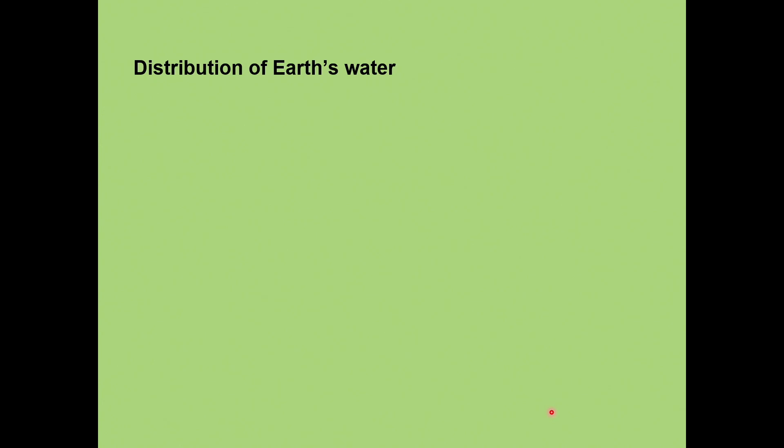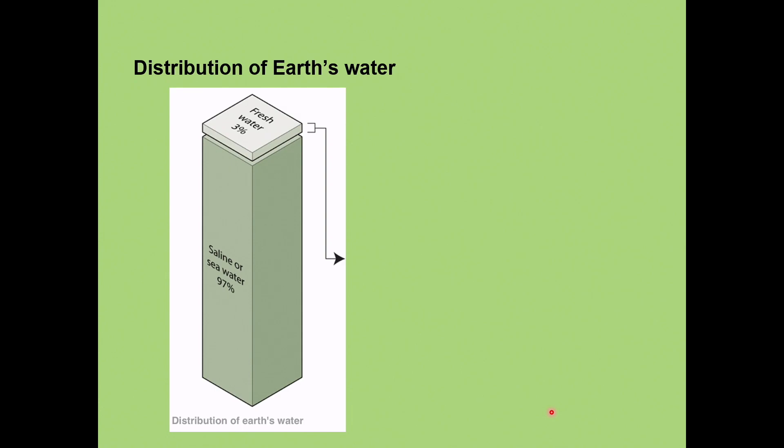Right, so how water is distributed across the earth. It's nice and straightforward. Three percent of the water that's on this planet Earth is fresh water. The other 97% is saline or sea water. Okay, so it's got salt in it and it is very potent. So three percent is fresh water. We're just going to focus on the fresh water.